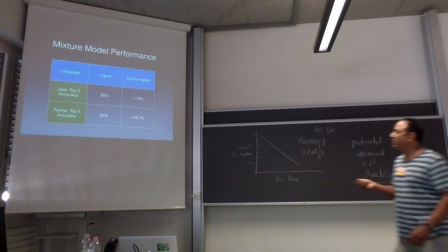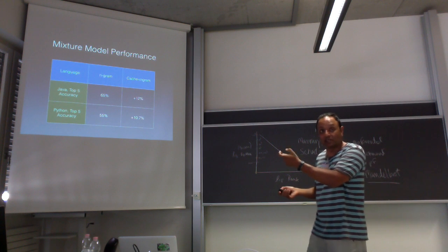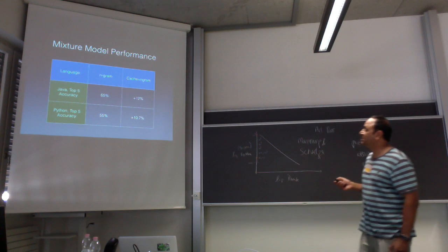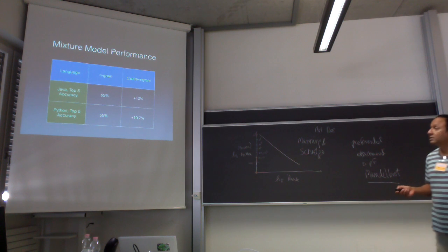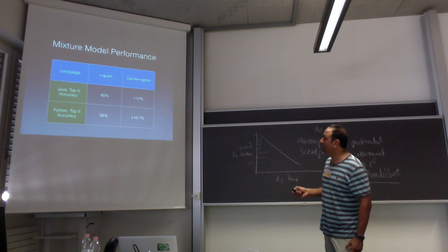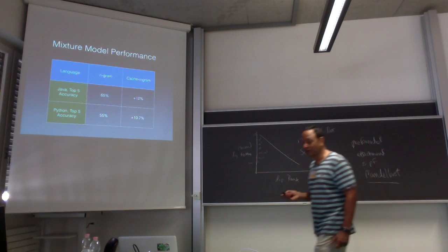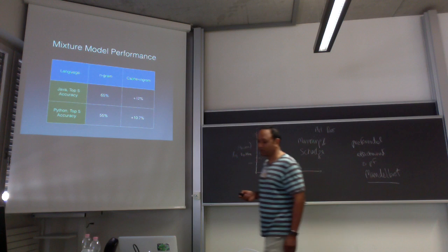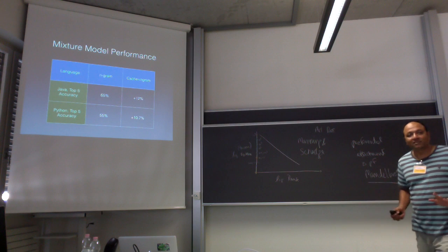For the extrinsic task of predicting the next token in Java: with n-grams you get 65% accuracy; with cache plus n-grams you get an additional 12% improvement. For Python, there's a similar gain of around 2.5–5.5%. So the cache model provides a substantial improvement in performance. The technology developed in NLP needs to be adapted to code because code is different in some important ways.